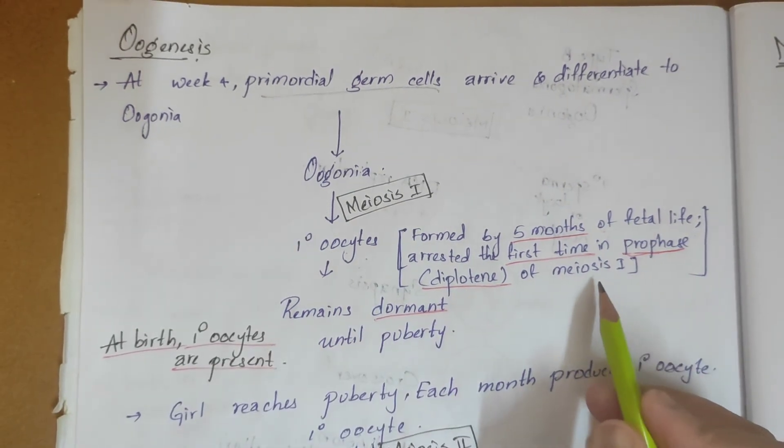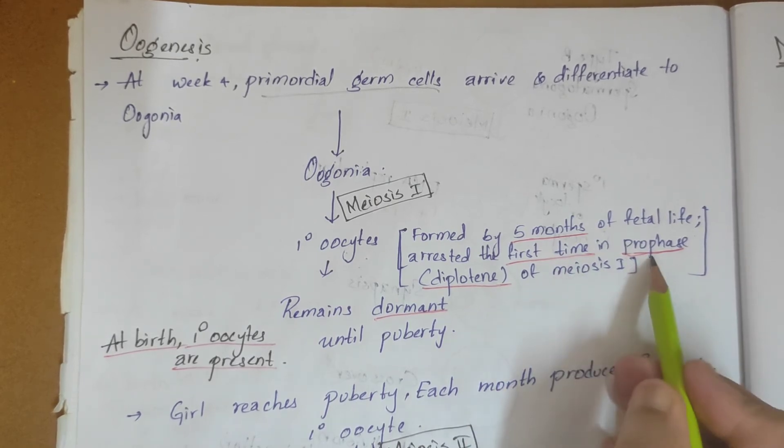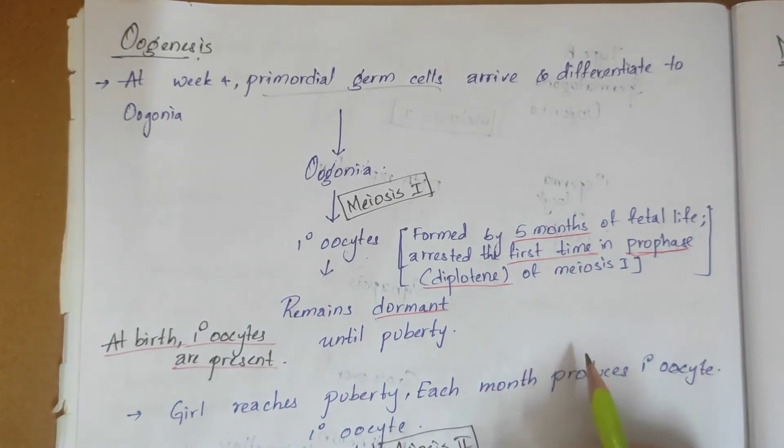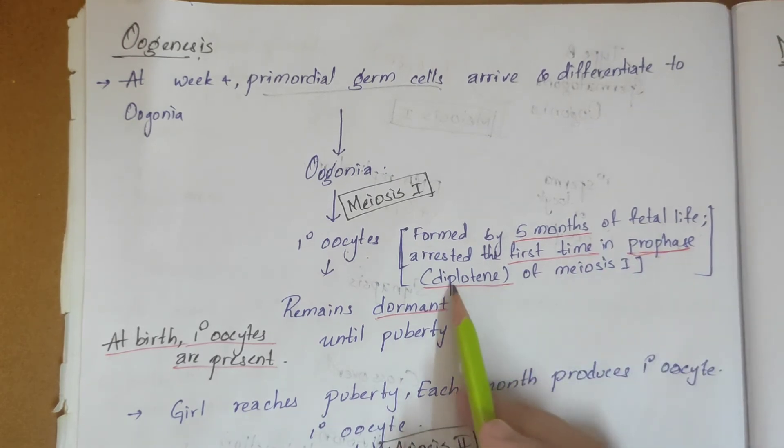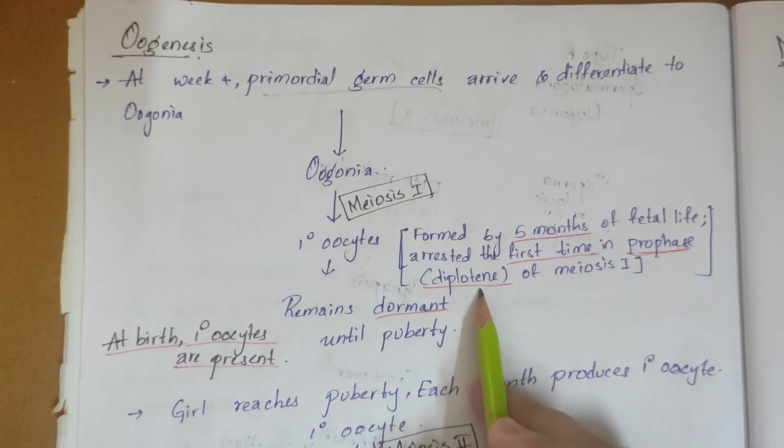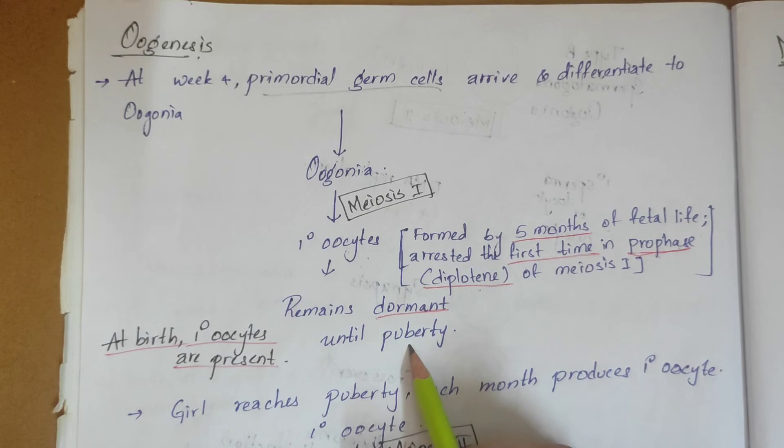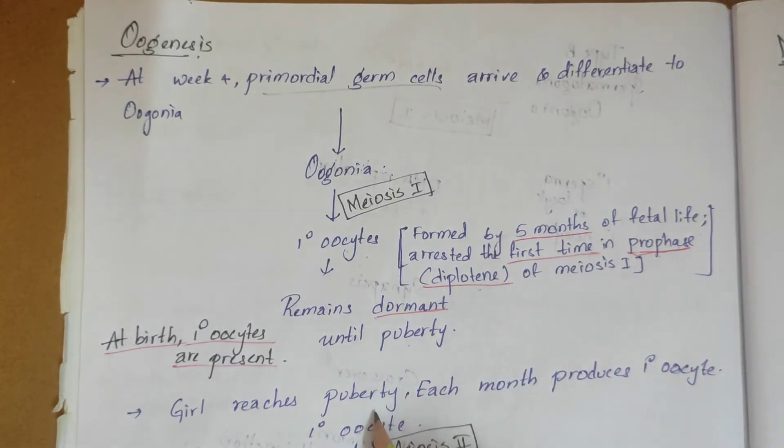It stops in meiosis 1 prophase. Prophase has 5 stages, and it stops in diplotene and remains dormant until puberty.